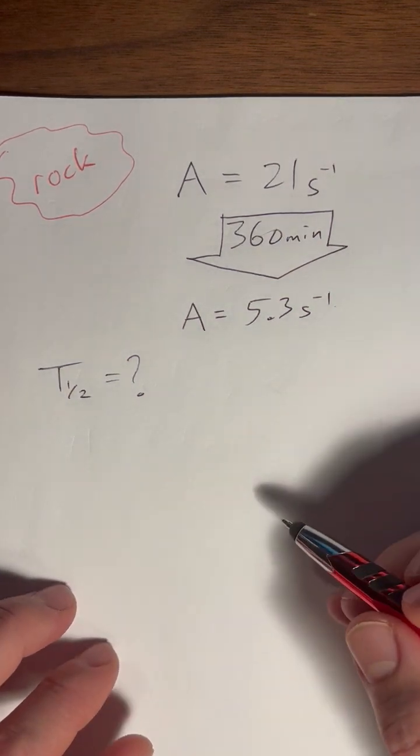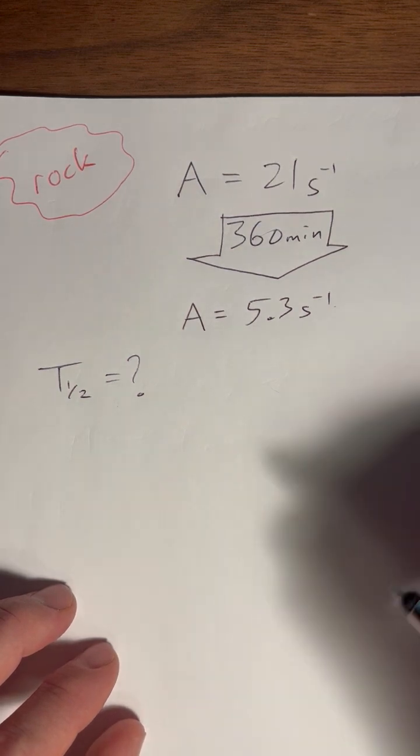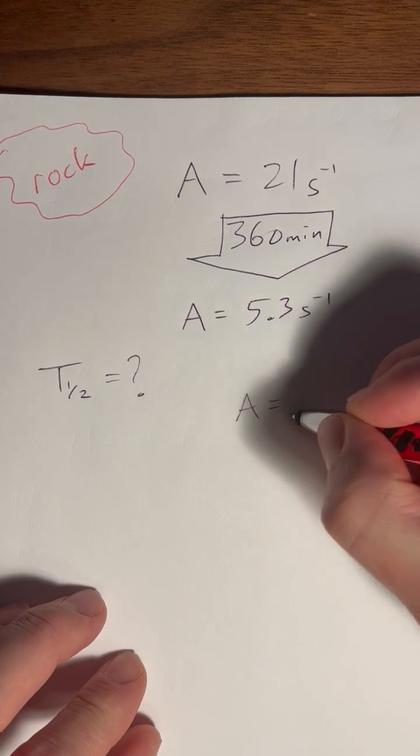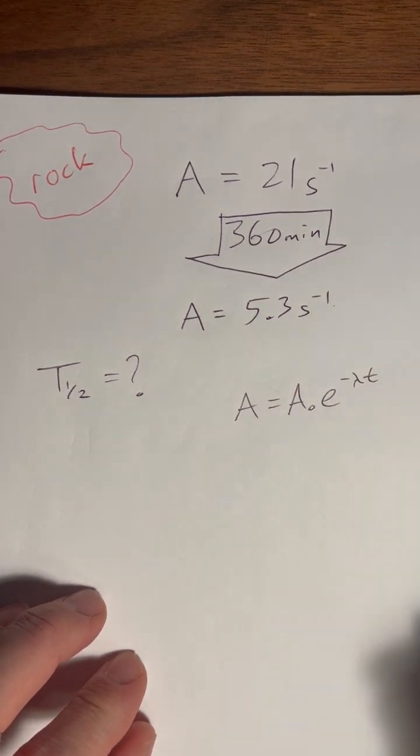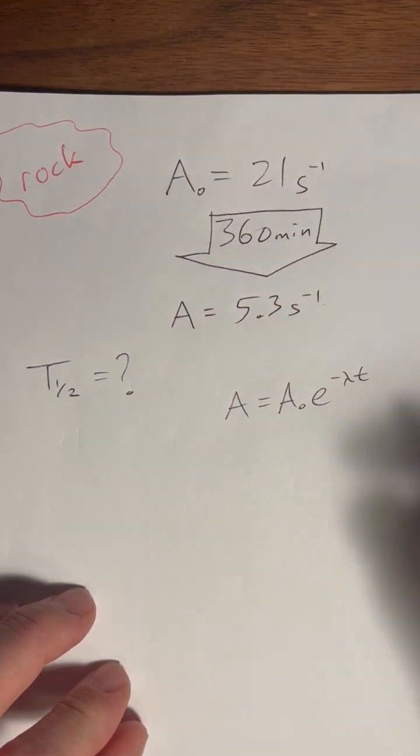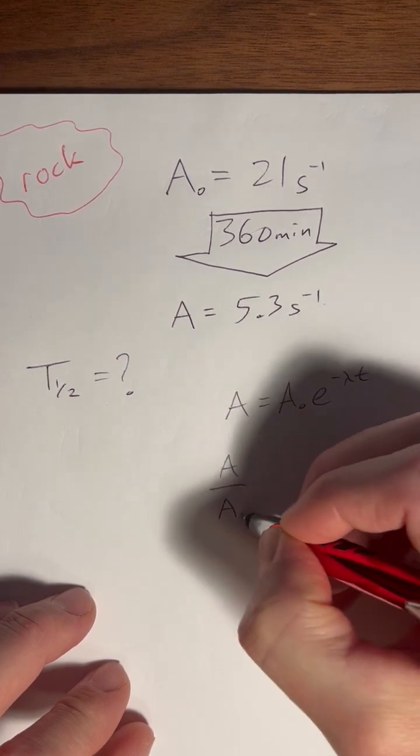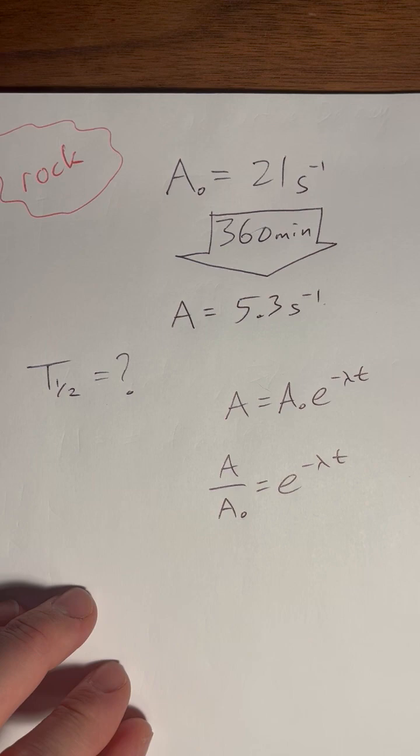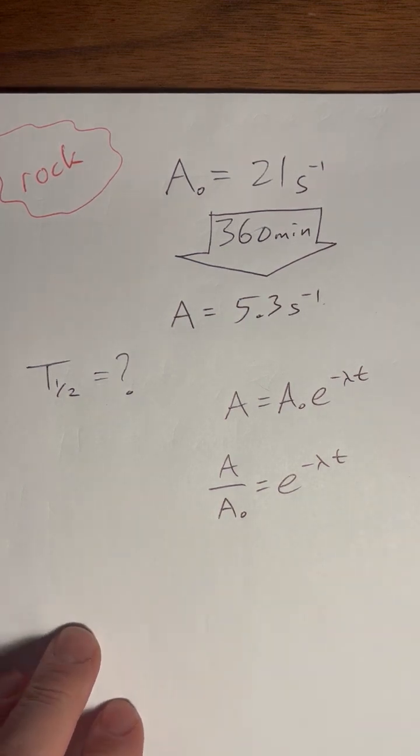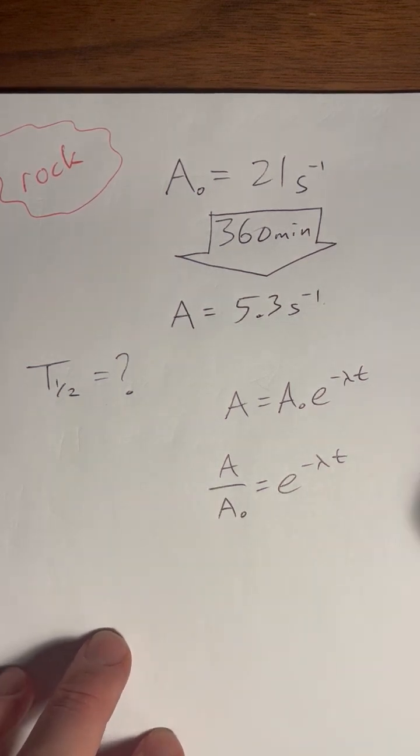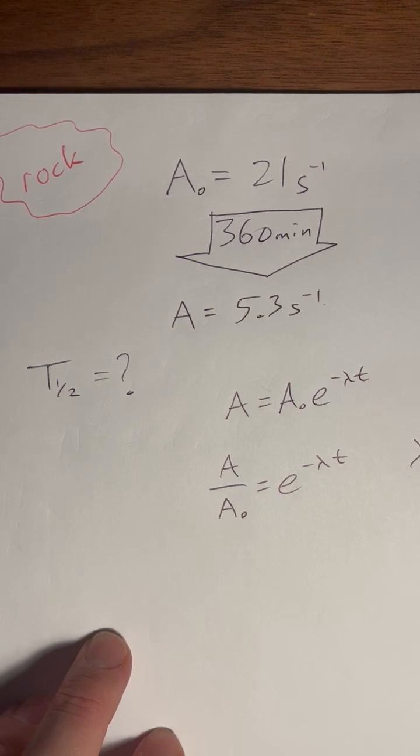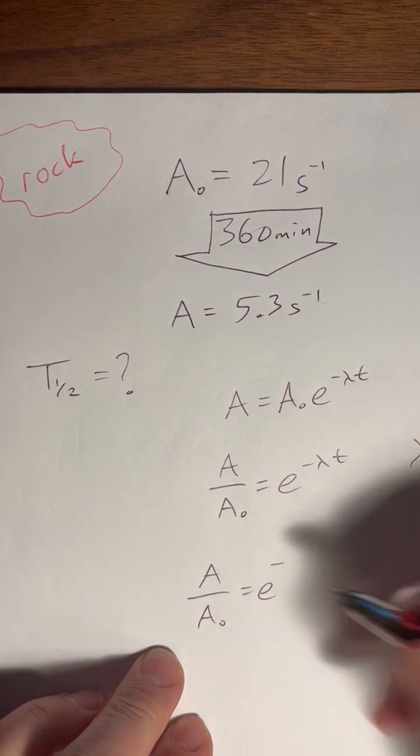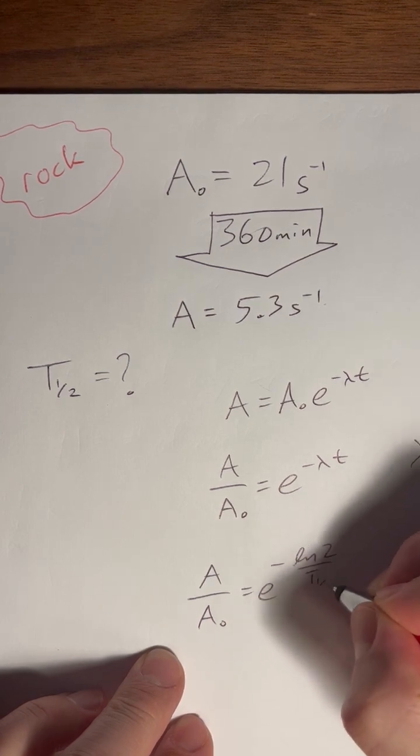Okay. So how do we do this? Well, our trick here is to find our lambda because we know that our formula A equals A naught times e to the negative lambda t is true. And so we can treat this as A naught and this as A, and we can say that A over A naught is equal to e to the negative lambda t. We know the t because the time between measurements is here, 360 minutes. Okay. And so how are we going to get our half-life? Well, lambda is equal to the ln of two over the half-life. And so we're going to insert that into here and we're going to say A over A naught is equal to e to the negative ln of two over the half-life all times t.